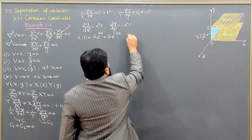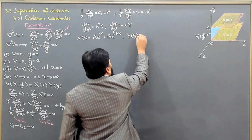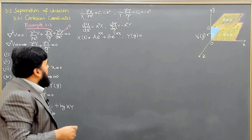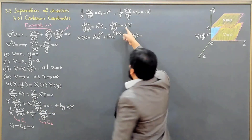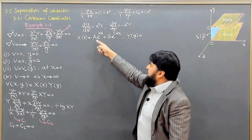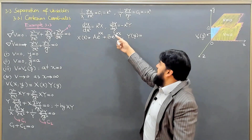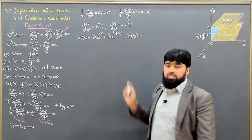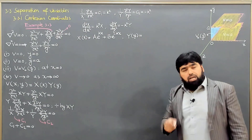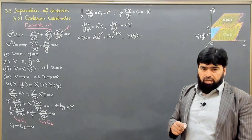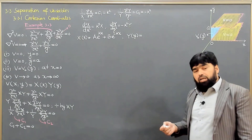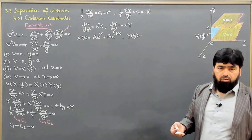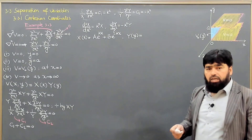The solution Y(y) can be written in the same way. With minus k-squared, it becomes A·e^(ikx) + B·e^(-ikx) for one constant, and C·e^(ikx) + D·e^(-ikx) for the other. But we utilize a trick — rather than writing this in terms of complex exponentials, we use the Euler formula and write it in the form of sine and cosine.